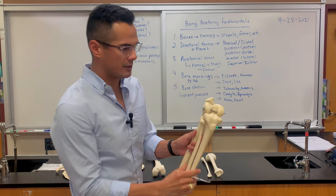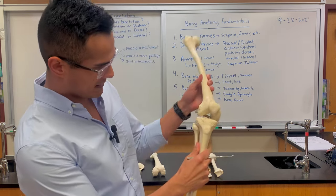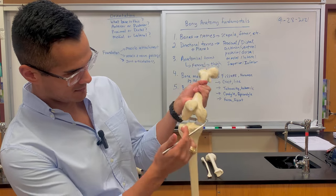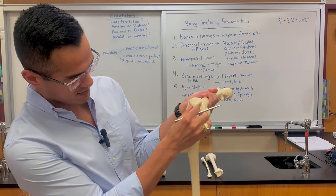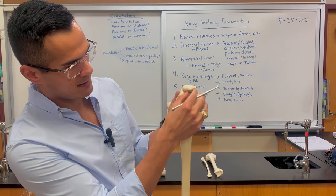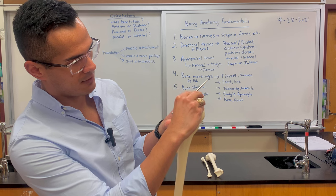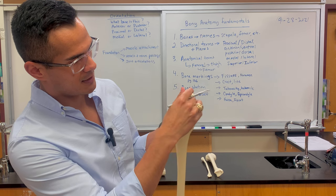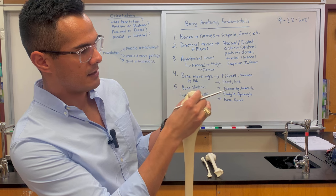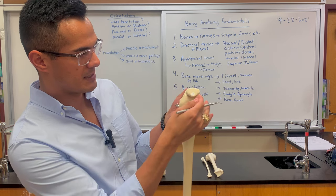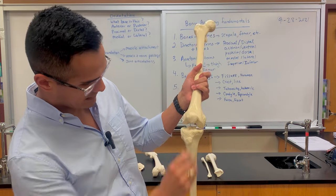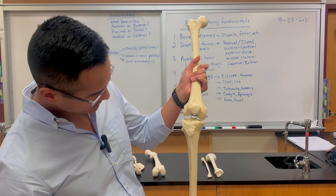We can also look at the patella. This part is the apex of the patella, and then you have the medial facet here and the lateral facet for the patella on this side.